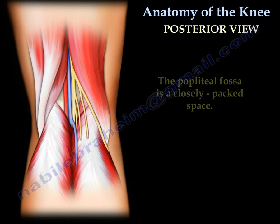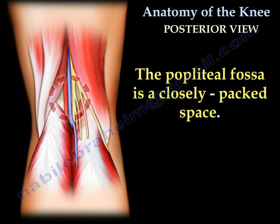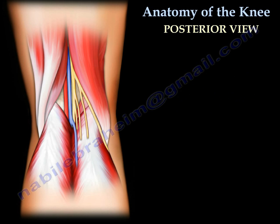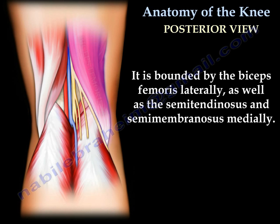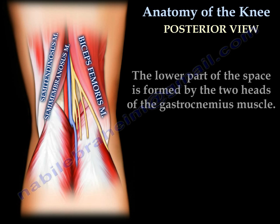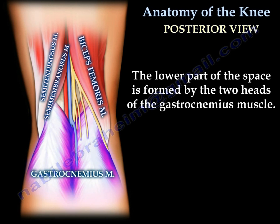As you can see, the popliteal fossa is a closely packed space. It is bounded by the biceps femoris laterally, as well as the semitendinosus and semimembranosus medially. The lower part of the space is formed by the two heads of the gastrocnemius muscle.